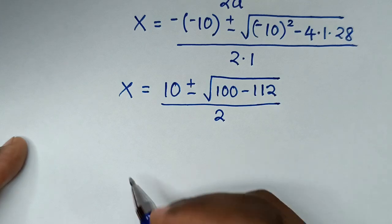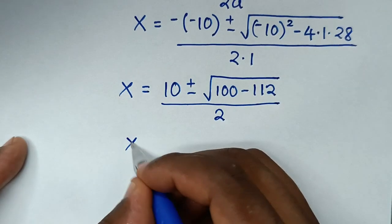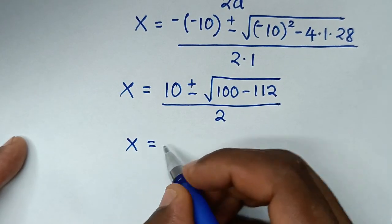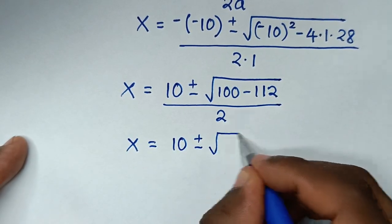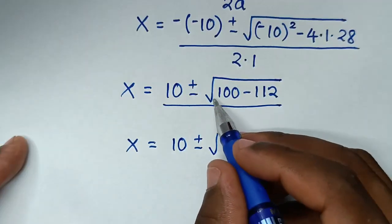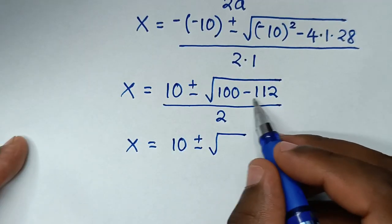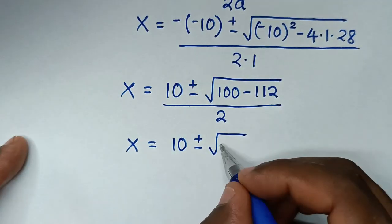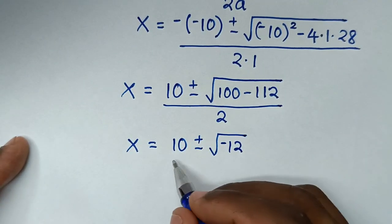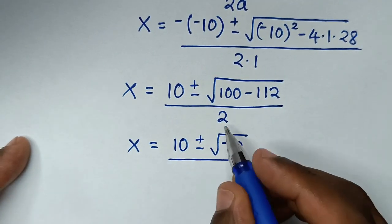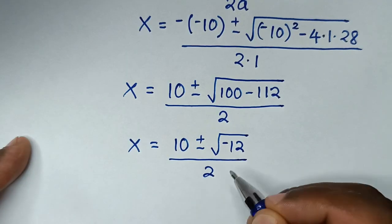So x = (10 ± √(100 - 112)) / 2 = (10 ± √(-12)) / 2.